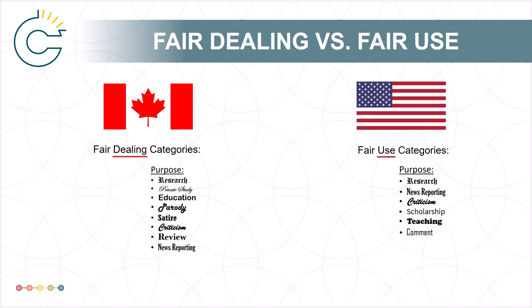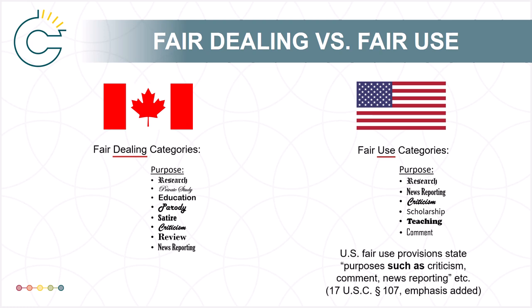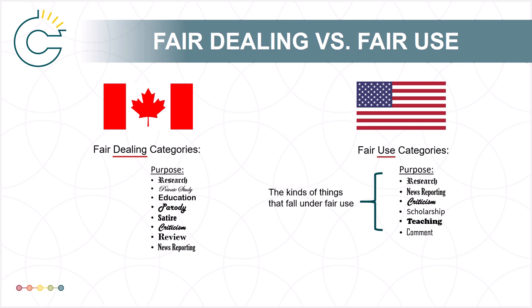Unlike Canada's legislation, the US legislation lists four factors used for assessing Fair Use. More importantly, the US Fair Use provisions state purposes such as criticism, comment, news reporting, etc. What is notable is not the similarities or differences in the purposes, but those two little words: 'such as.' The US list is illustrative — it allows for purposes closely aligned with the stated purposes but not exactly as stated. In contrast, the Canadian Fair Dealing purposes are exhaustive; your use must fall within the specific categories listed to qualify. This is an important difference.